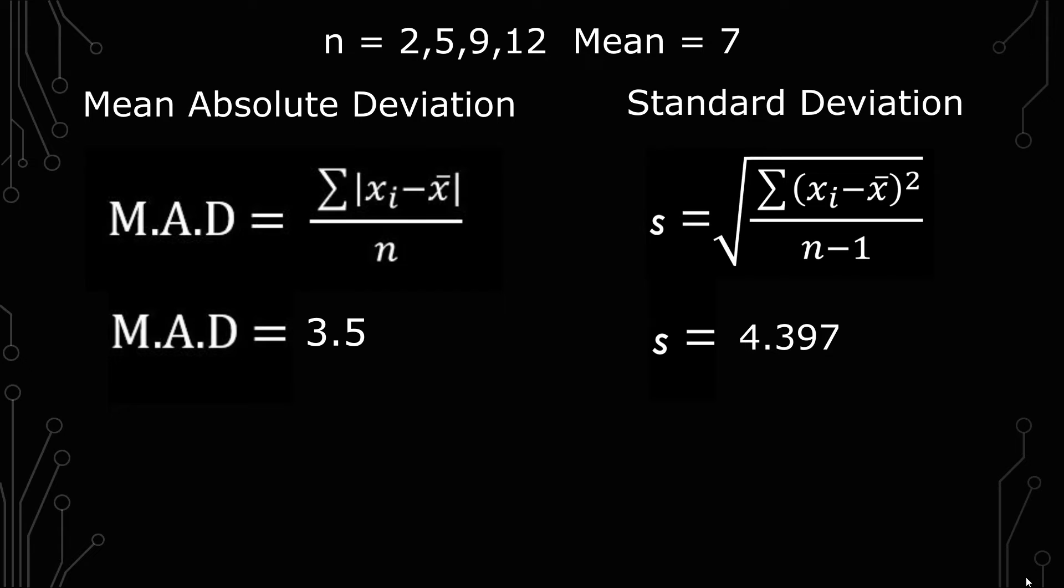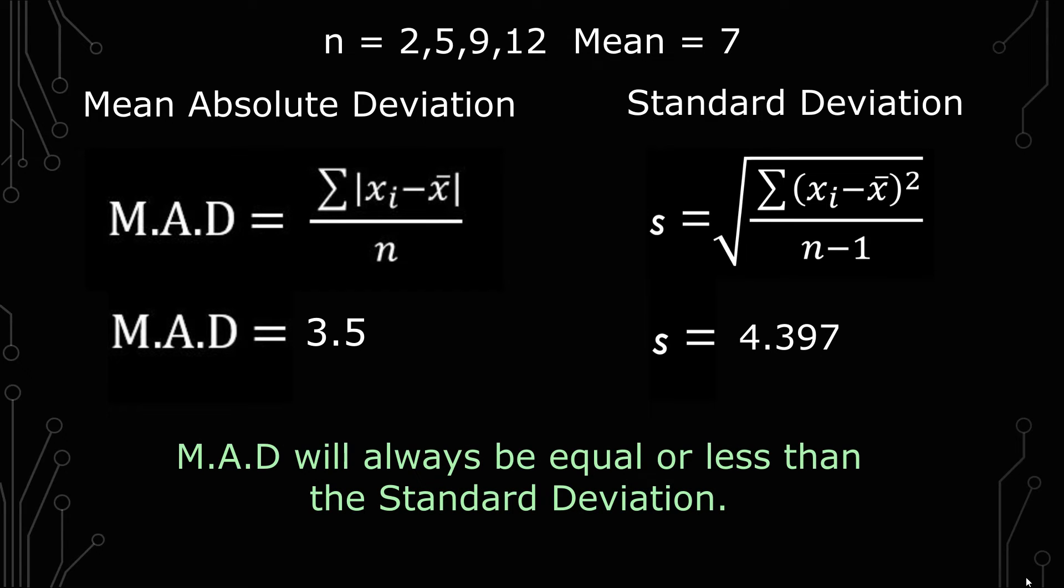But that's what it is. The standard deviation will usually be bigger because of its squaring function, as opposed to an absolute function that the mean absolute deviation has. So the mean absolute deviation will always be equal to or less than the standard deviation.